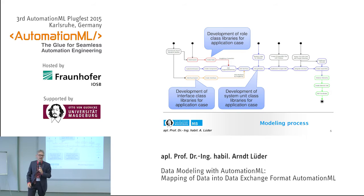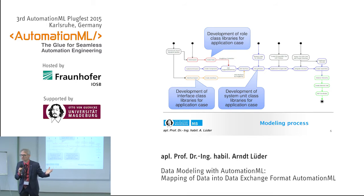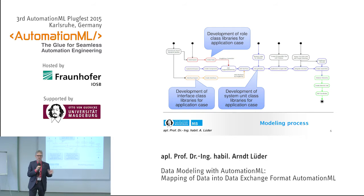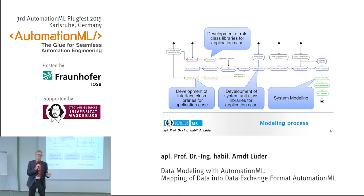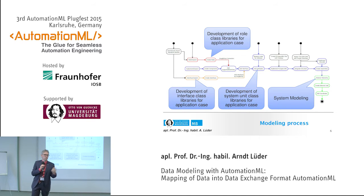If we have both, we can develop our reusable objects — product catalogues, for example. And if we have all three sets of libraries, then we can start to model our system. The three sets of libraries we usually develop once, but the system models we do very often.